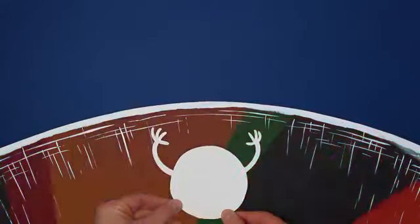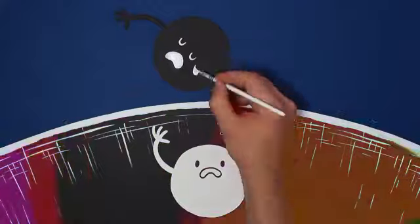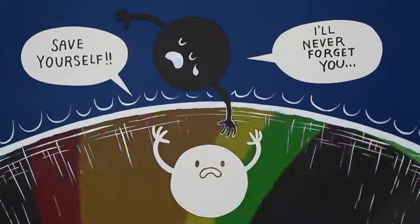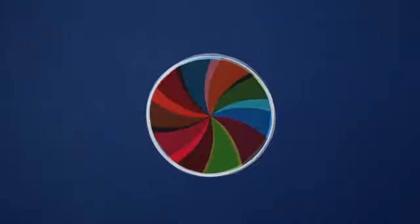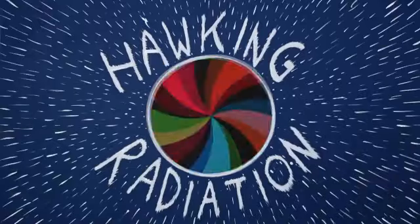When this happens at the edge of a black hole, one of the pair of particles can fall in, leaving the other to escape. This tiny stream of escaping particles is known as Hawking radiation.